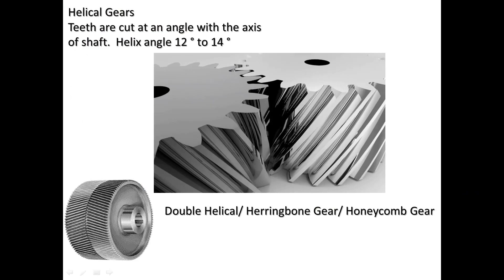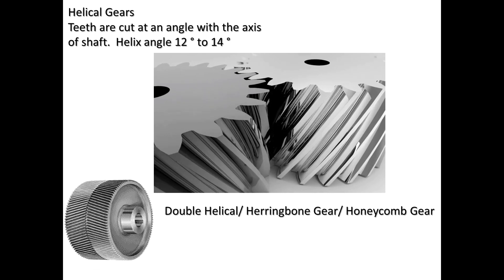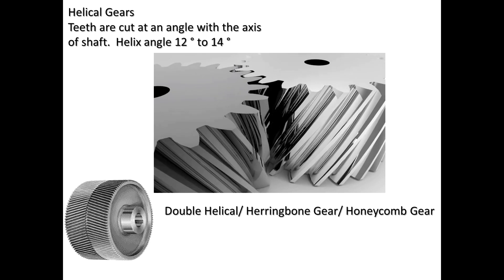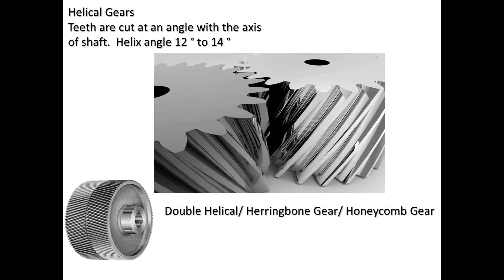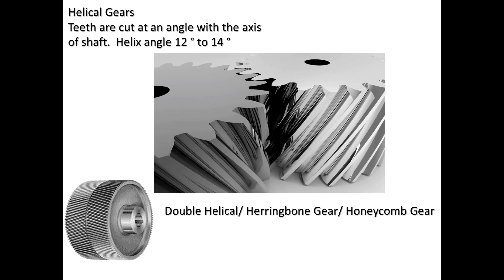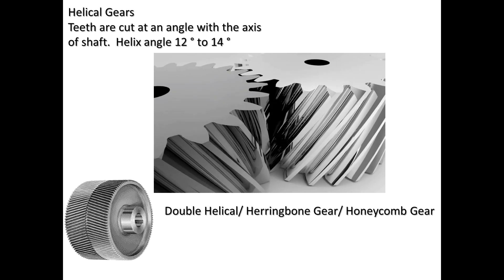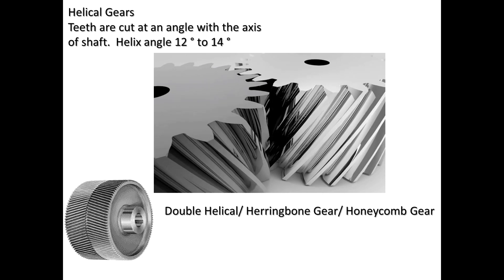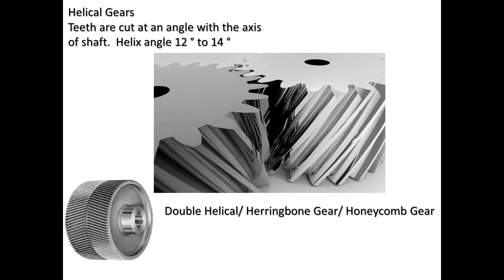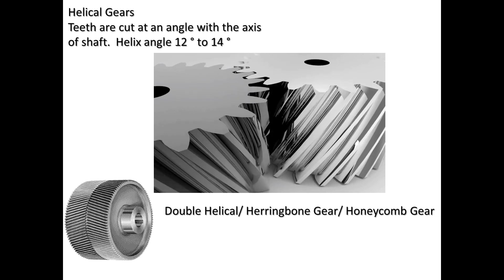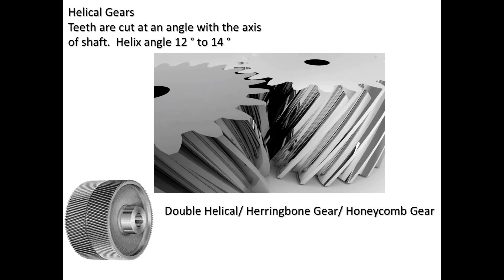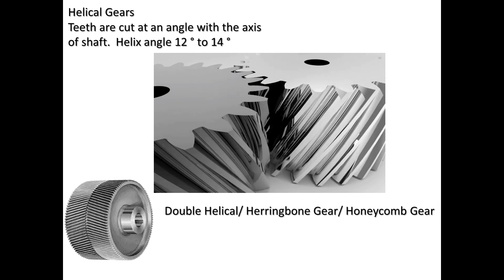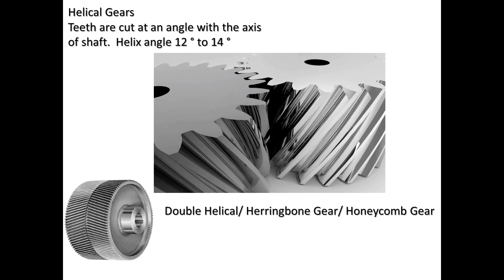The next gear type is helical gears. For helical gears, the teeth are cut at an angle with respect to the axis of the shaft — around 12 to 14 degrees — which is called the helix angle or psi. The teeth are in helical shape and cut at this particular helix angle. In helical gears the power transmitting capacity is greater than spur gears and they can take heavier loads. Since tooth engagement is gradual rather than sudden, the operation noise is less compared with spur gears. You can see the 2D sketch where two helical gears are connected.